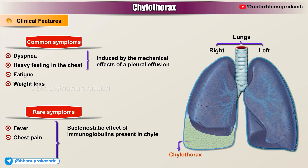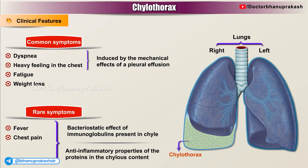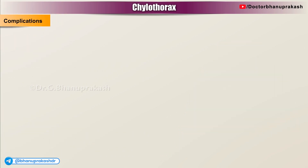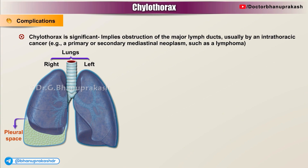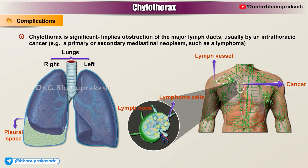Chest pain is rare in this condition because of the anti-inflammatory properties of the proteins in the chylous content, which prevent the pleuritic inflammatory response. Complications: Chylothorax is significant because it implies obstruction of the major lymph ducts, usually by an intrathoracic cancer, e.g. a primary or secondary mediastinal neoplasm such as a lymphoma. It can be either lymphomatous or non-lymphomatous.